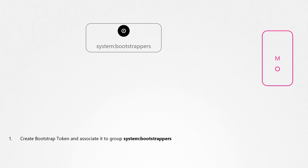A special type of authentication token called a bootstrap token can be created for this purpose. Associate the bootstrap token to a group called system bootstrappers. We then configure the Kubelet to use this token to authenticate into the API server. We can use the same token for all worker nodes or create a separate one for each node. Once configured, what kind of permissions do these tokens have? Can they make any API calls on the API server?